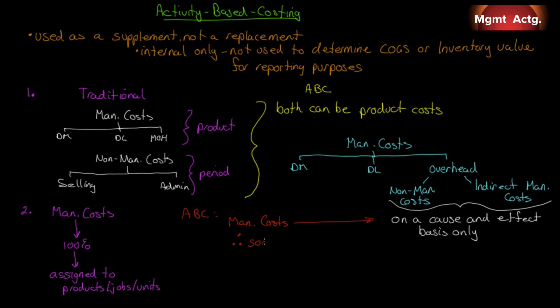Therefore, some manufacturing overhead will be treated as a period expense, not a product expense under ABC. Now, that is not valid for external reporting. You can't do that for external reporting.